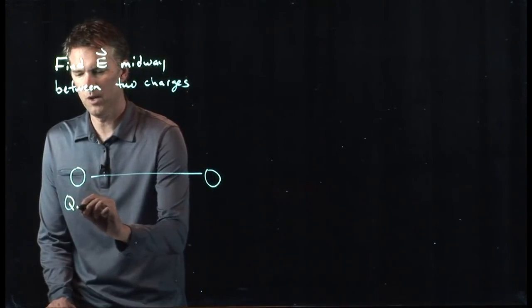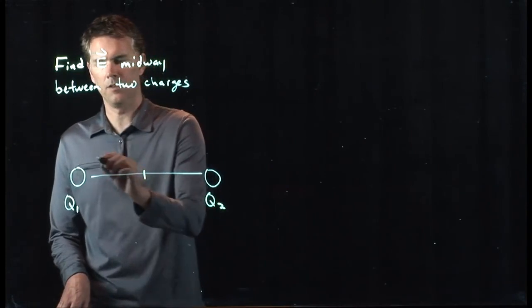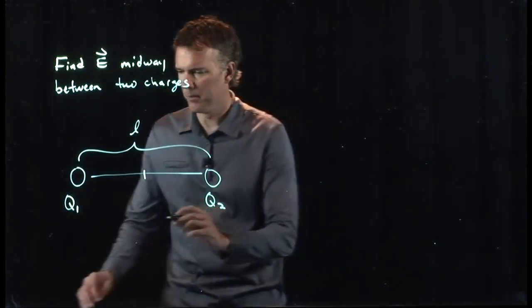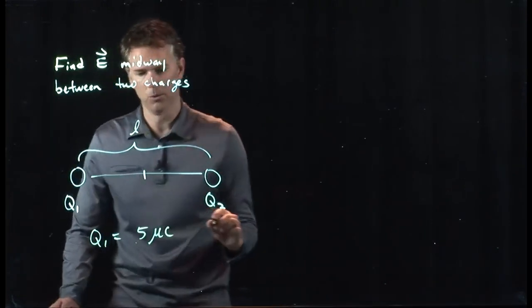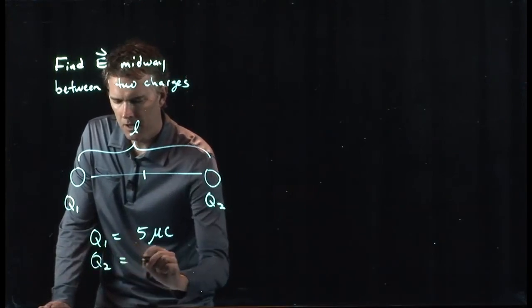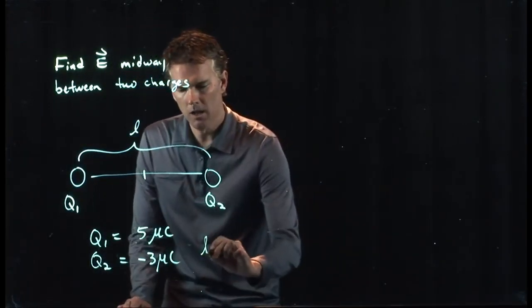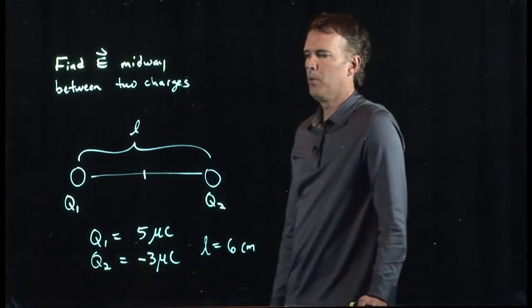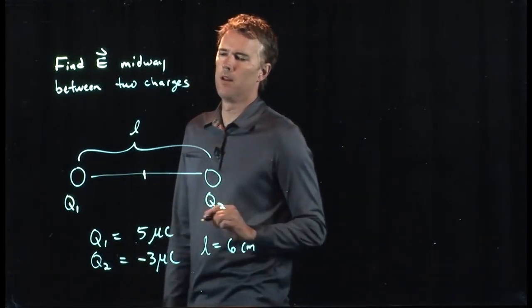This is charge Q1, this is charge Q2. We are a distance midway between and we'll call the total distance L. Let's give you some numbers here. So Q1 is going to be 5 microcoulombs, Q2 is negative 3 microcoulombs, and L is equal to 6 centimeters. We want to find the E field right in the center, right there midway between.